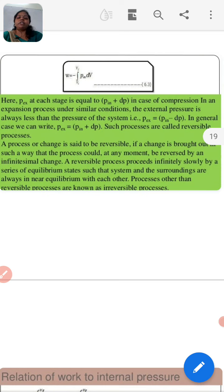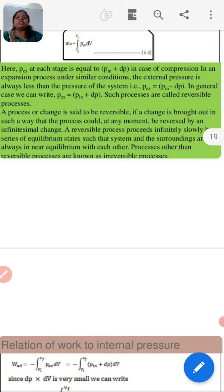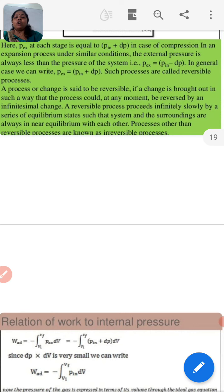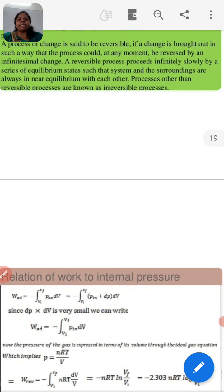A process or change is said to be reversible if the change is brought about in such a way that the process could at any moment be reversed by an infinitesimal change. This reversible process proceeds slowly by a series of equilibrium stages such that the system and the surrounding are always near equilibrium with each other. So, if we talk about equilibrium, then in that the system and surrounding are both in equilibrium, in a slow stage, and the process that continues is the irreversible process that continues.